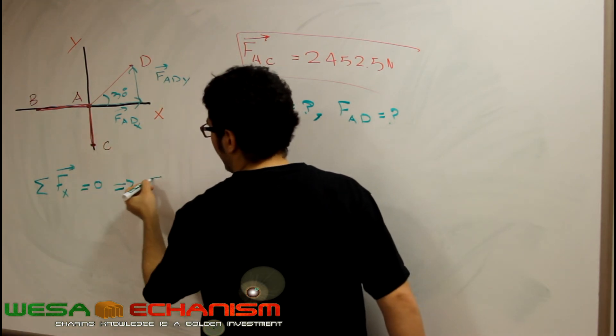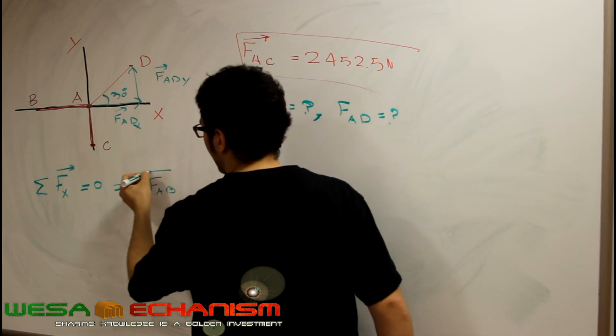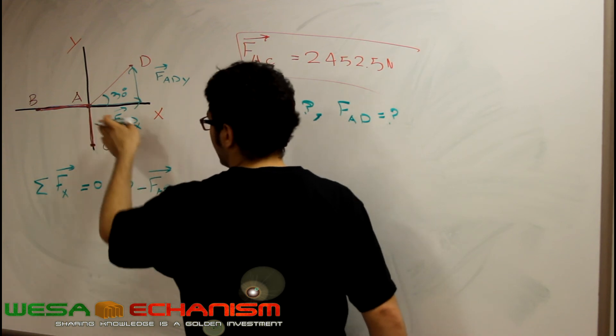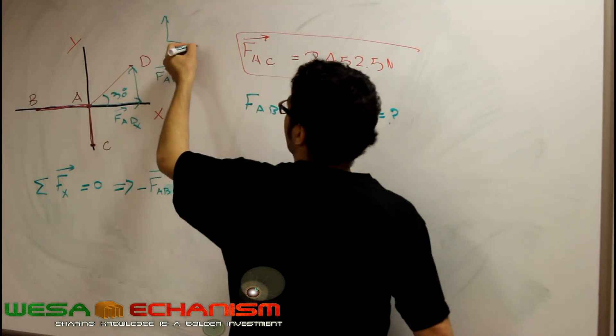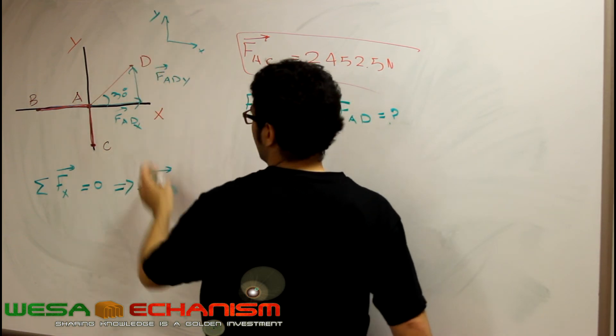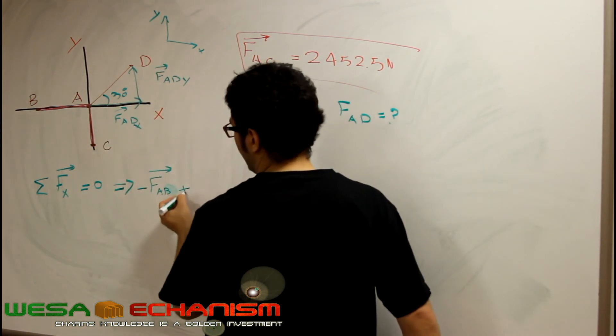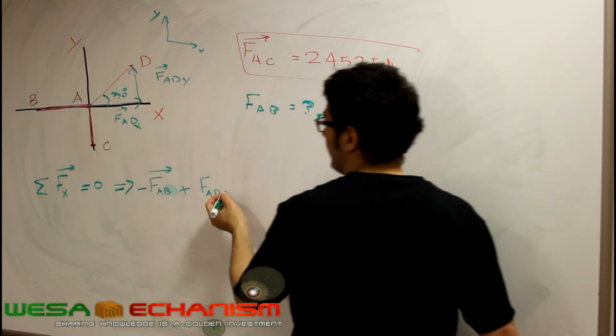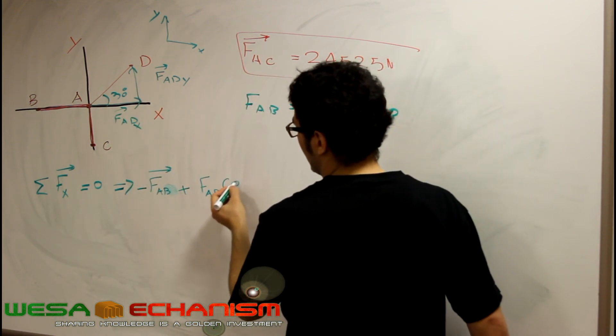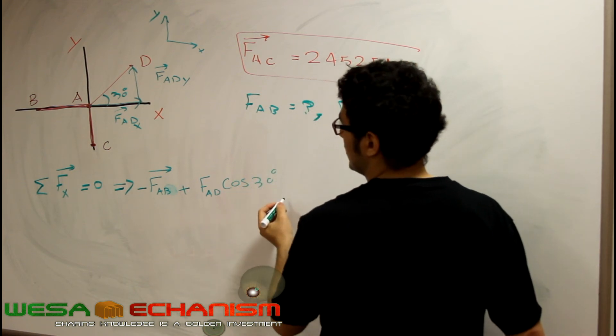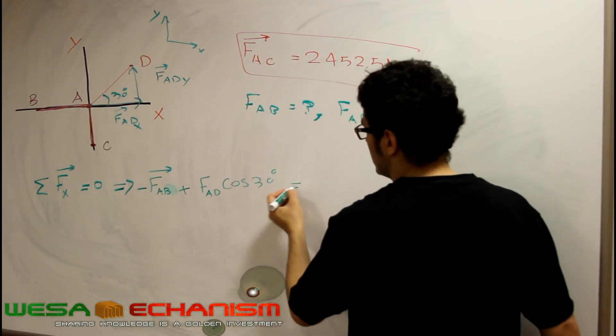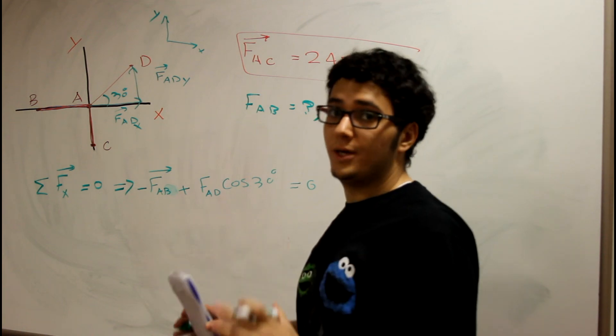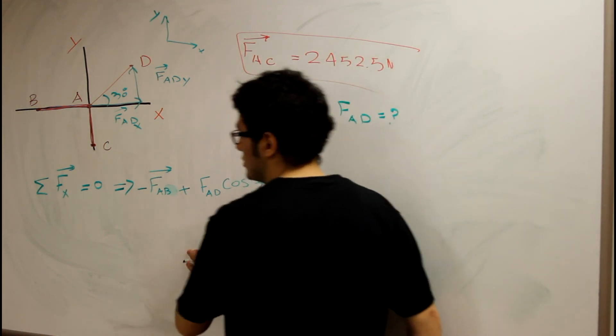In the X direction we have FAB going in the X direction, and it's negative. I'm sorry for not putting my axes. And we have also this force, which is FAD X, which is going to be FAD cosine 30 degrees. And in here we have nothing. This is equal to zero. This is unknown; we cannot find any force, but we can write our main equation for the sum of the forces in the X direction.